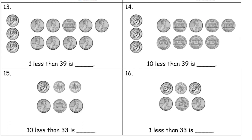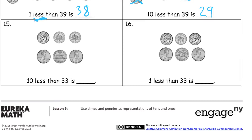And then we have, now we're looking at less. So one less than thirty-nine. And that's one less, so we're not going to cross off a dime because that would be ten less. We're going to cross off a penny. So that's thirty-eight. And then ten less than thirty-nine, I'm going to cross out a dime. And so now I still have the nine ones, but now I only have ten, twenty in dimes. So it's twenty-nine. Ten less than thirty-three. So I have three dimes and I have three pennies. And ten less means I'm going to cross out a dime. And now I have ten, twenty and one, two, three. Twenty-three.